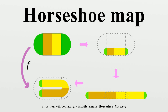In the horseshoe map, the squeezing and stretching are uniform. They compensate each other so that the area of the square does not change. The folding is done neatly, so that the orbits that remain forever in the square can be simply described.